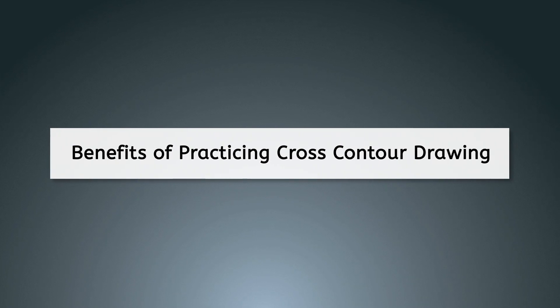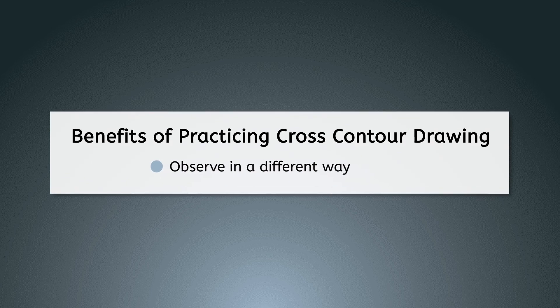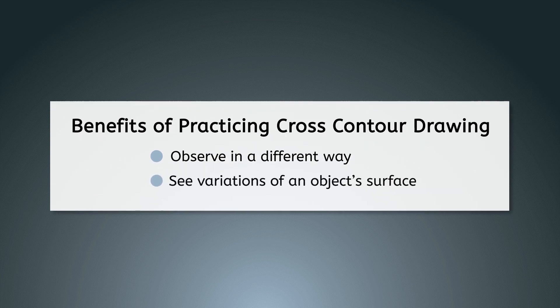Cross contour drawings teach you that objects are more than just an outline. Cross contour drawing is a great test in observing in a very different way, as you are not only attempting to interpret the outline and major details, but are trying to see the variations of an object's surface and display them in two dimensions.